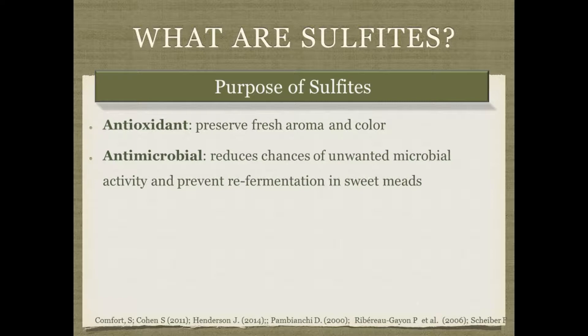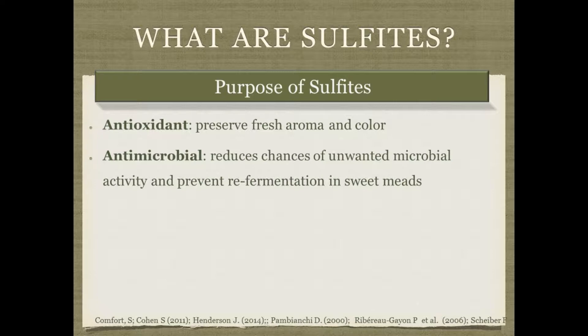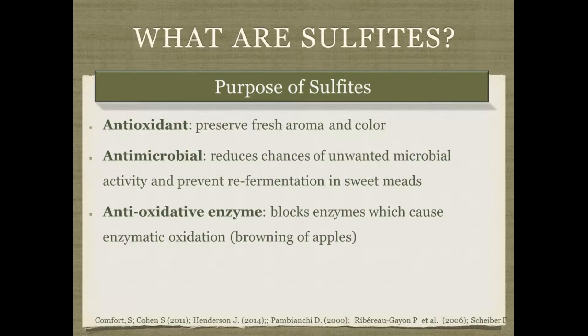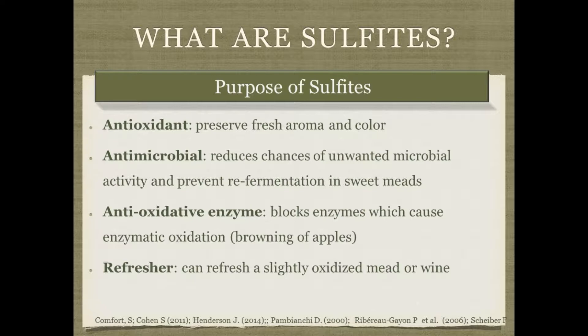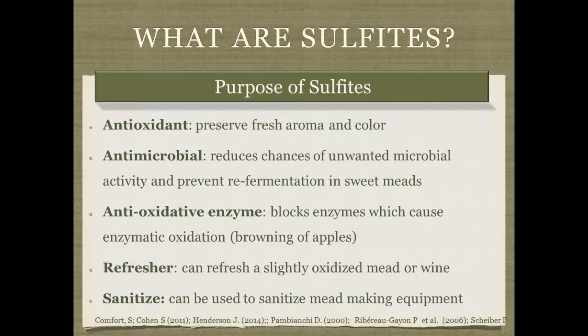Sulfites are also an antimicrobial, preventing unwanted microbial activity from wild yeast or bacteria. Combined with sorbate, they can help prevent re-fermentation in the bottle, avoiding corks being pushed out or bottles exploding. They also act as anti-oxidative enzymes, blocking enzymatic oxidation — think browning in apples after cutting. If your mead is slightly oxidized but not ruined, sulfites can act as a refresher. Finally, you can use them as a sanitizing agent for equipment.